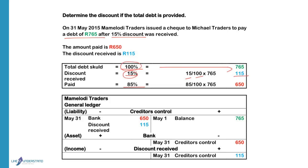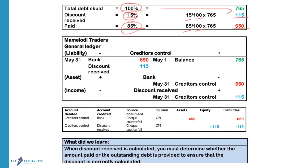If we want to work out the amount that we will pay, the percentage we want is 85 and the one we know is 100, so that gives us 650 Rand. The creditors control has a credit balance of 765 Rand. We will debit the creditors control with the amount paid and the discount to reduce the total to 765.